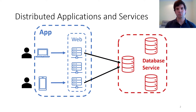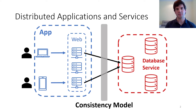Applications are often supported by a set of services, for instance a distributed database. As part of a service's interface, it provides some set of guarantees, called a consistency model, about how it behaves in the face of concurrent operations.